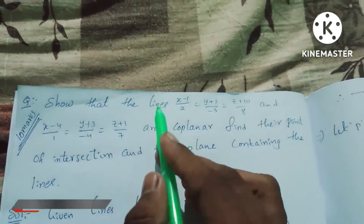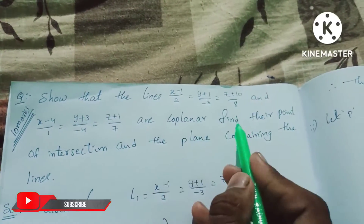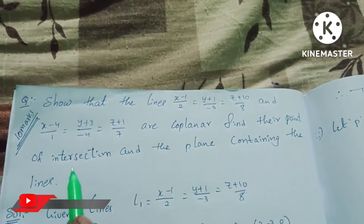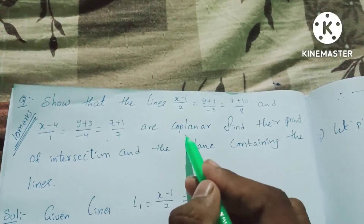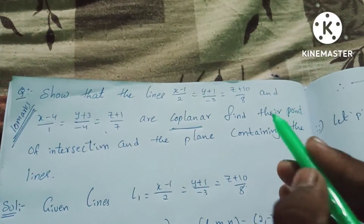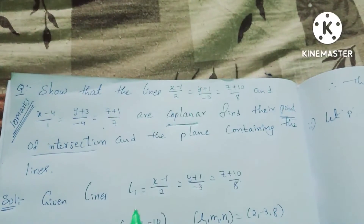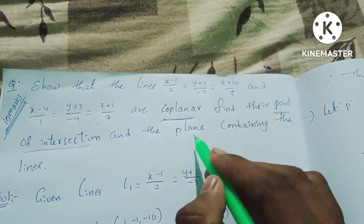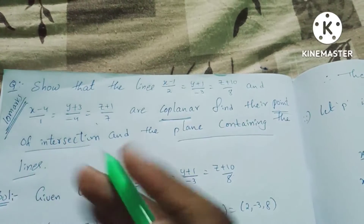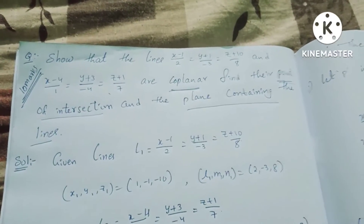We need to show that the lines are coplanar. There are three parts: first, verify the lines are coplanar; second, find their point of intersection; and third, find the plane containing the lines. Let's look at the solution.